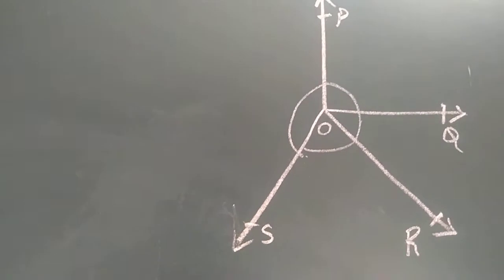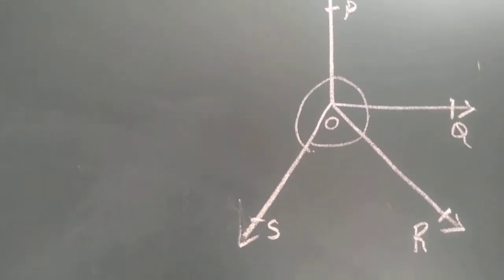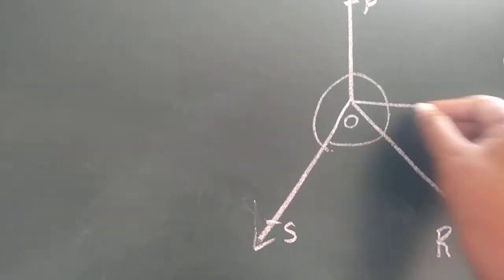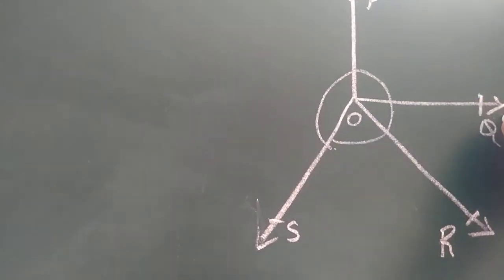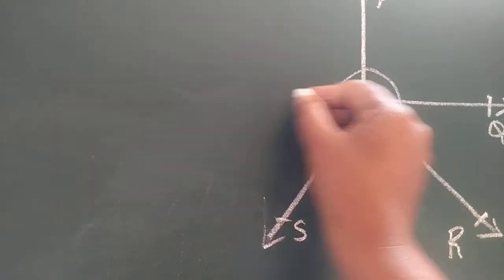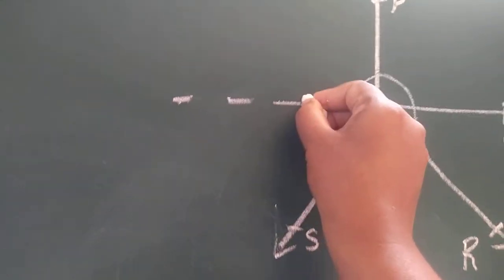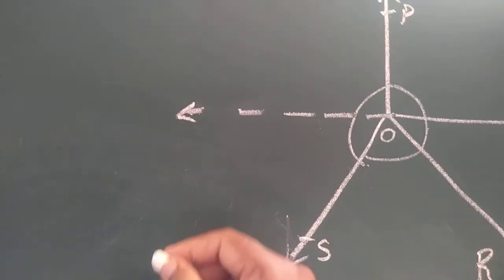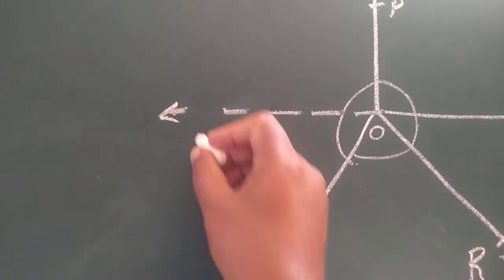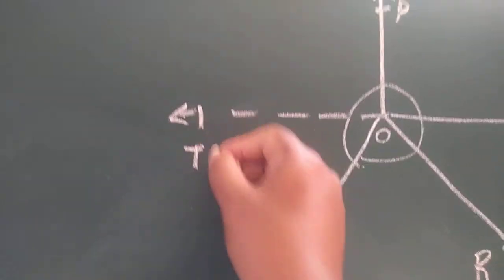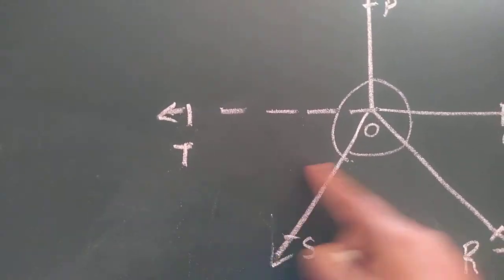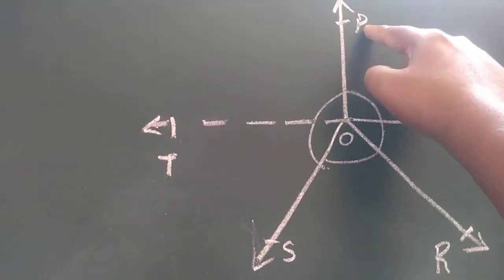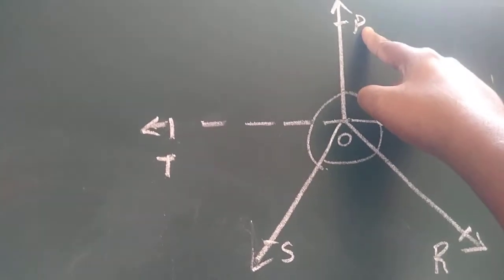For that I have to make some initial arrangement — I have to produce ray OQ in the opposite direction so that it forms a straight line. Now you can observe here is a straight line. I will name this endpoint as T, so T-Q makes one straight line. Then ray OP is standing on this straight line.